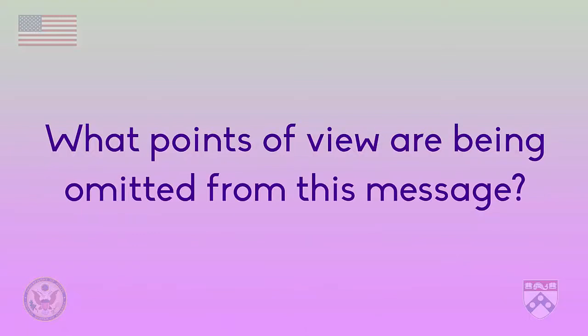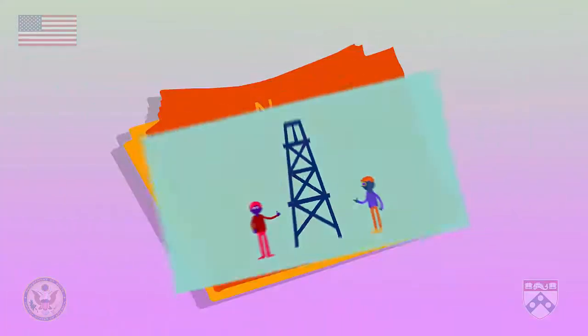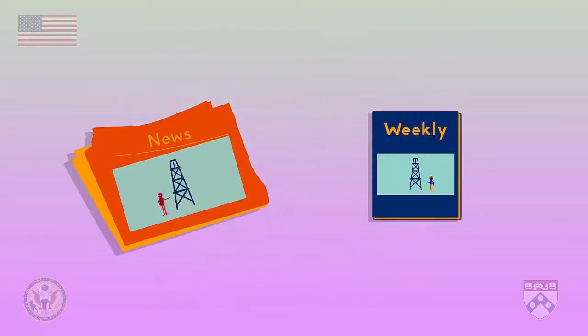People can disagree about how to interpret almost any situation. Therefore, a media message that tries to avoid bias by omission will show more than one point of view. Also, the media should show us why someone might support these different points of view. You may need to look at several media sources in order to get a good idea about the different points of view on a situation.